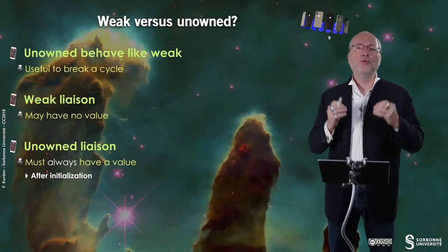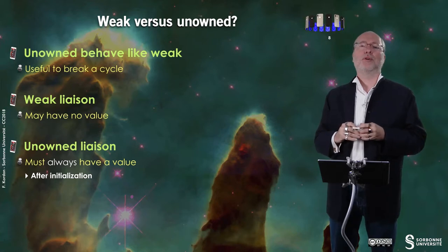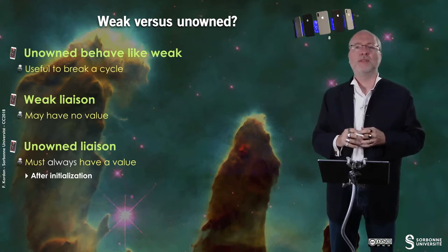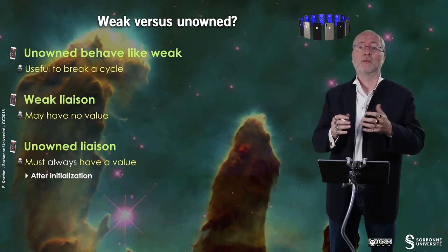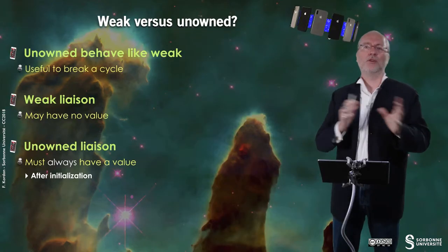Just a comment on weak versus unowned. Unowned variables behave like weak variables — it's a way to break a cycle. But on a weak liaison, they may have no value, meaning it's possible to have a default value set to nil, for example in the case of a Person optional. If you have an unowned liaison, it must always have a value, at least after initialization. That's the main difference.